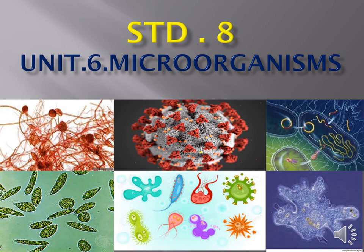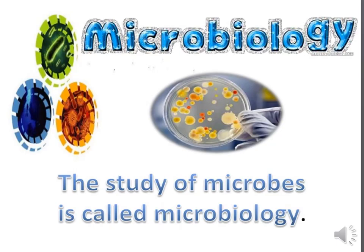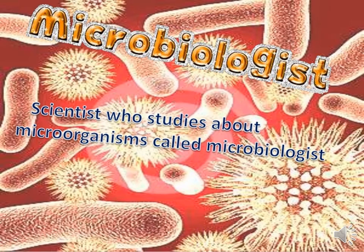Today we are going to discuss about Chapter 6: Micro-Organisms. An organism which cannot be seen by our naked eyes, and can be seen only through the microscope, is said to be a Micro-Organism or Microbe. The study of Microbes or Micro-Organisms is called Micro-Biology. The scientist who studies about Microbes or Micro-Organisms is called a Microbiologist.